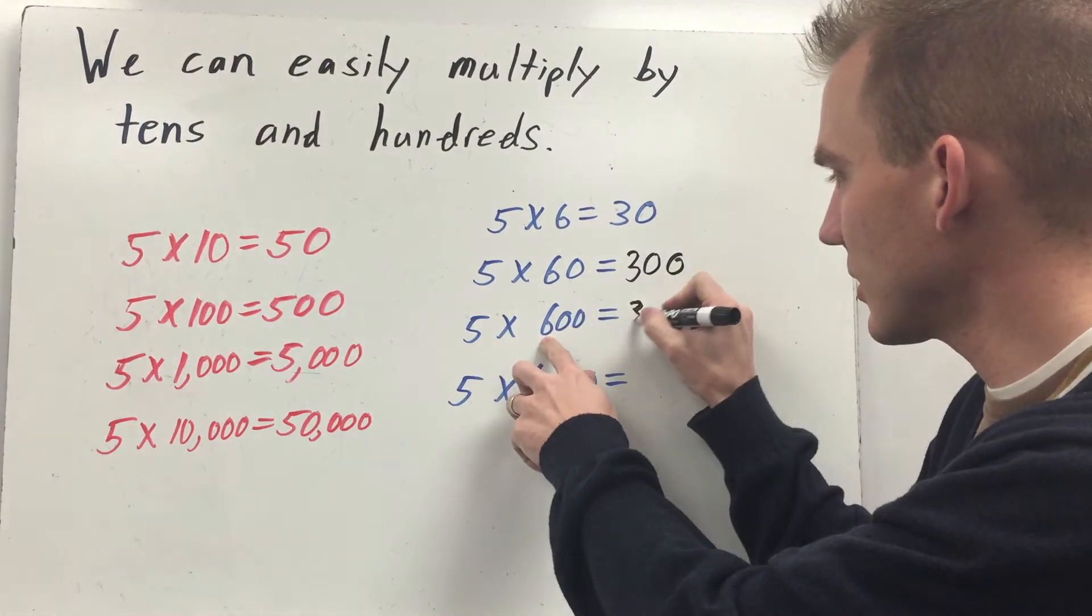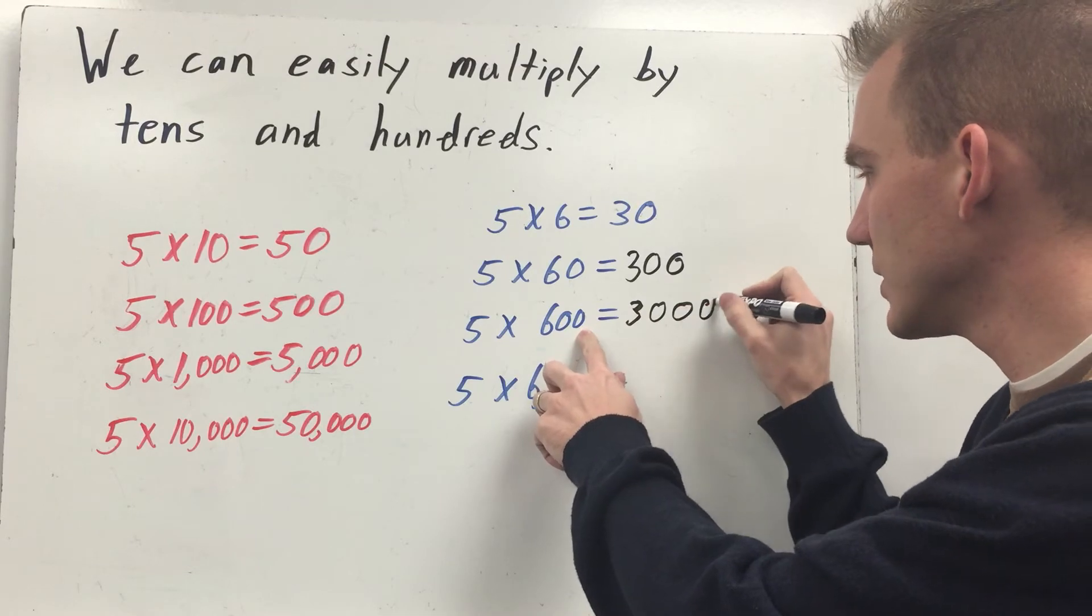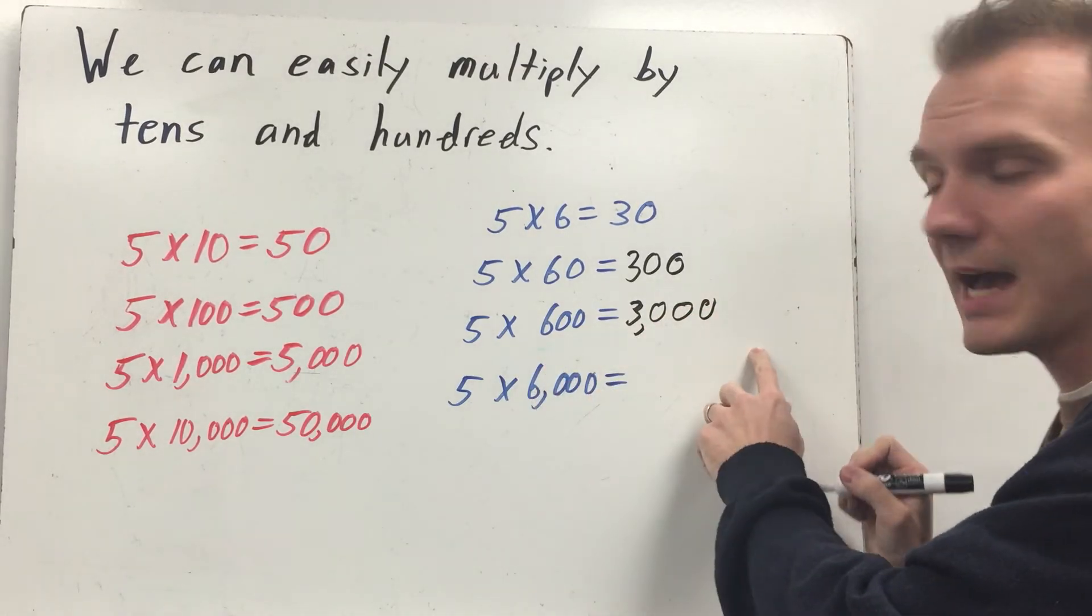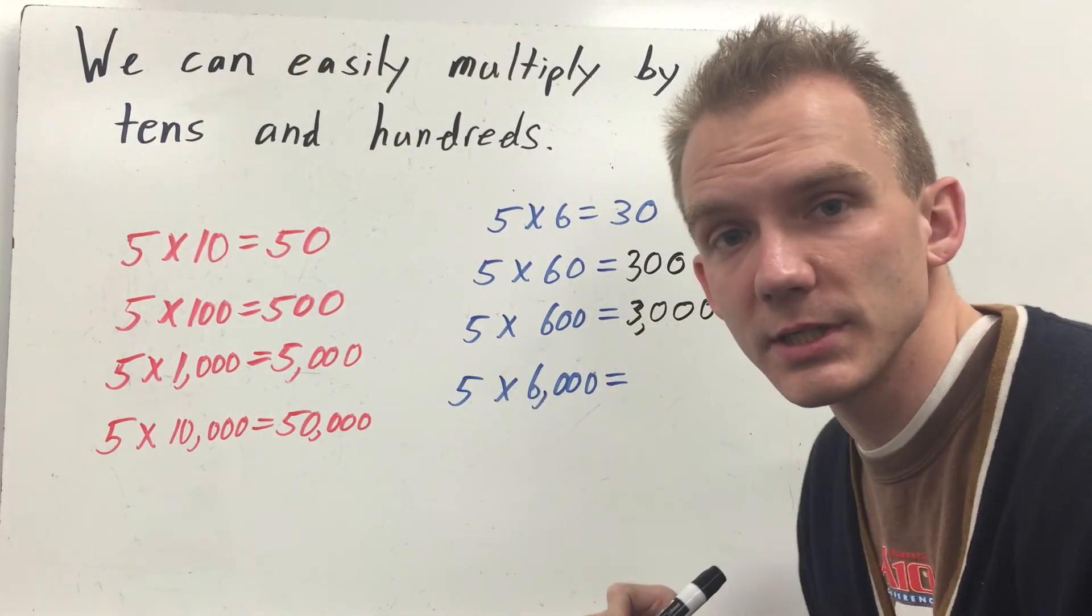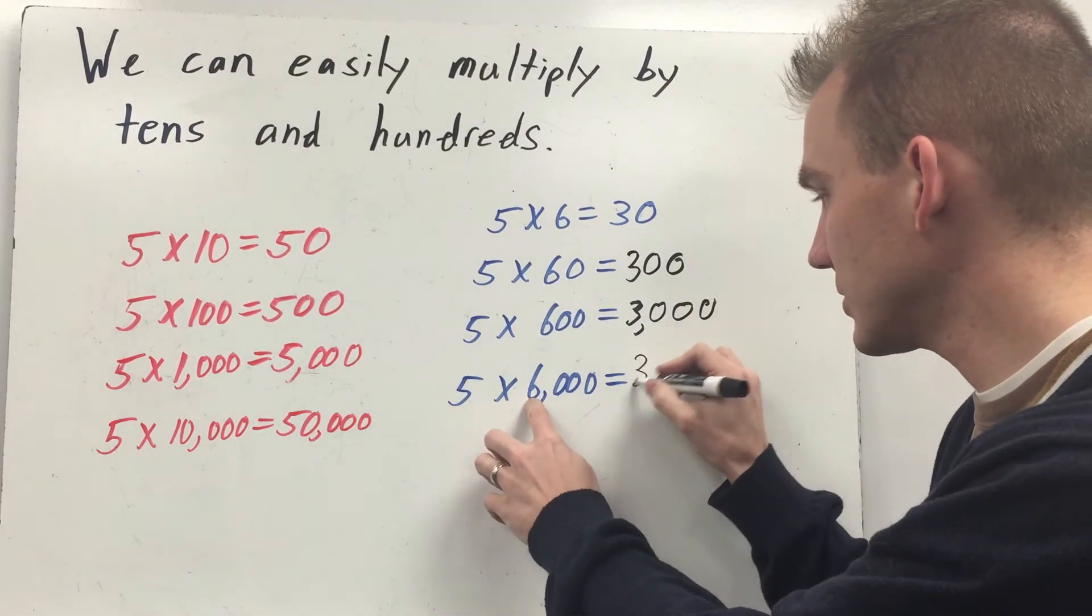You'll get a product of three hundred. Again, five times six is thirty. And this time I add two zeros. And that becomes three thousand. So five times six hundred is three thousand.